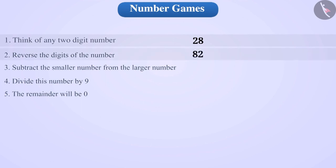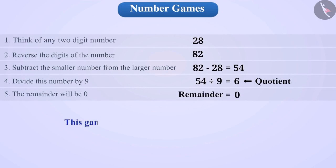Now, by reversing the digits of this number, we will get the number 82. Now, by subtracting 28 out of 82, we get 54. And dividing the number 54 by 9, we get a quotient 6 and a remainder 0.